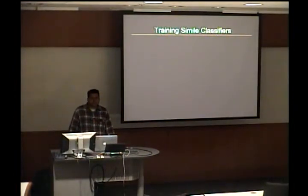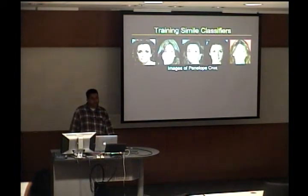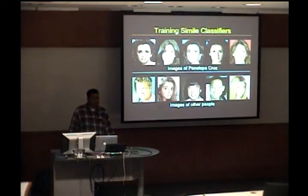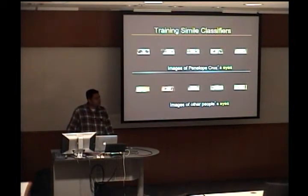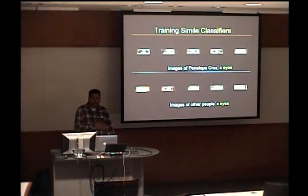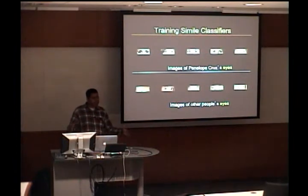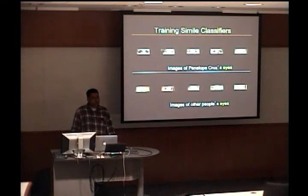We built things called simile classifiers in a fairly similar way. Instead of labeling attributes on images, we labeled identity. We had a number of images of Penelope Cruz and a number of images of other people, then looked at one part of the face — for example, the eyes — and trained a classifier. What this classifier is learning is how similar your eyes look to Penelope Cruz's. We can do this for many different people across many different face parts, giving us a collection of simile classifiers.